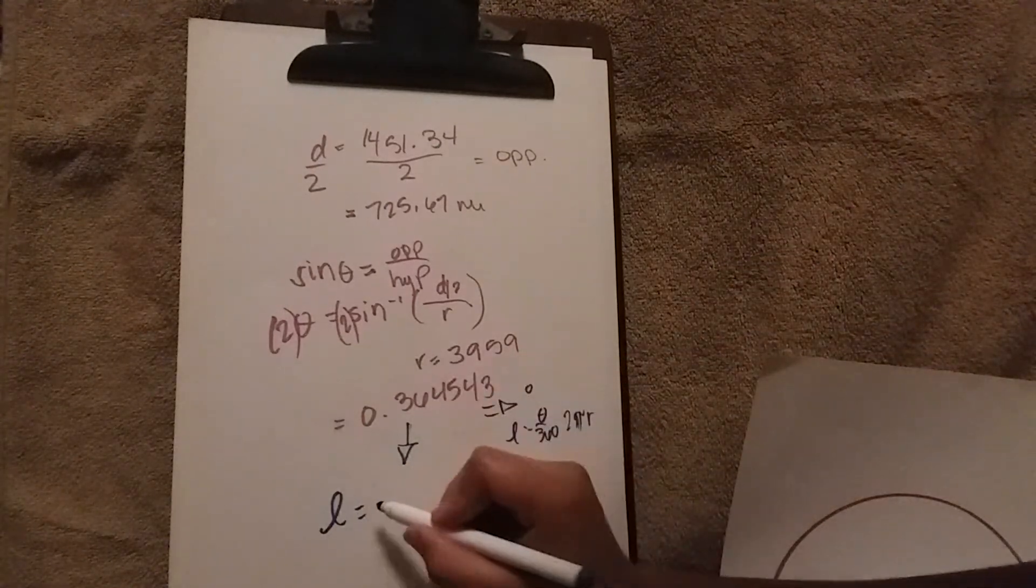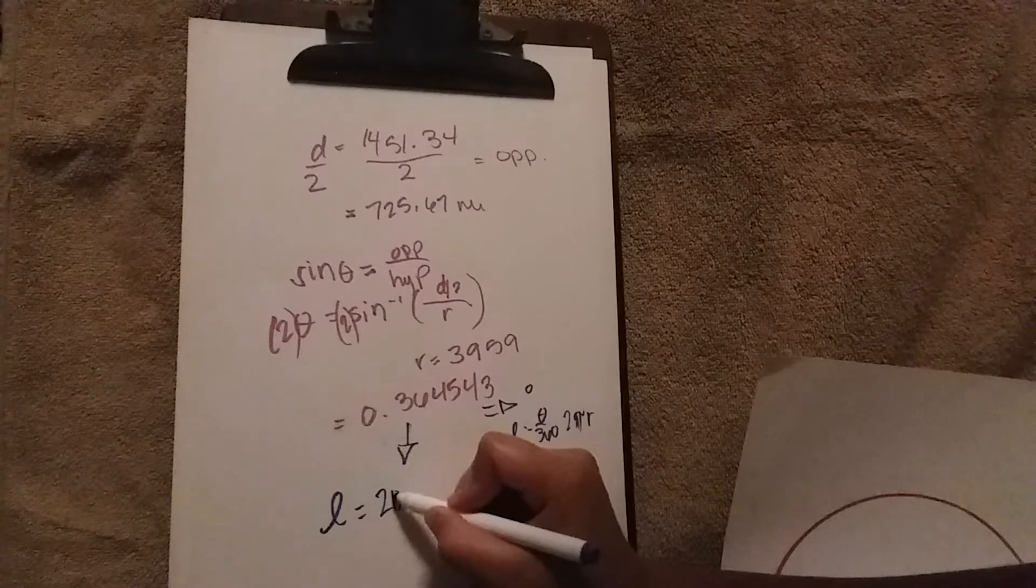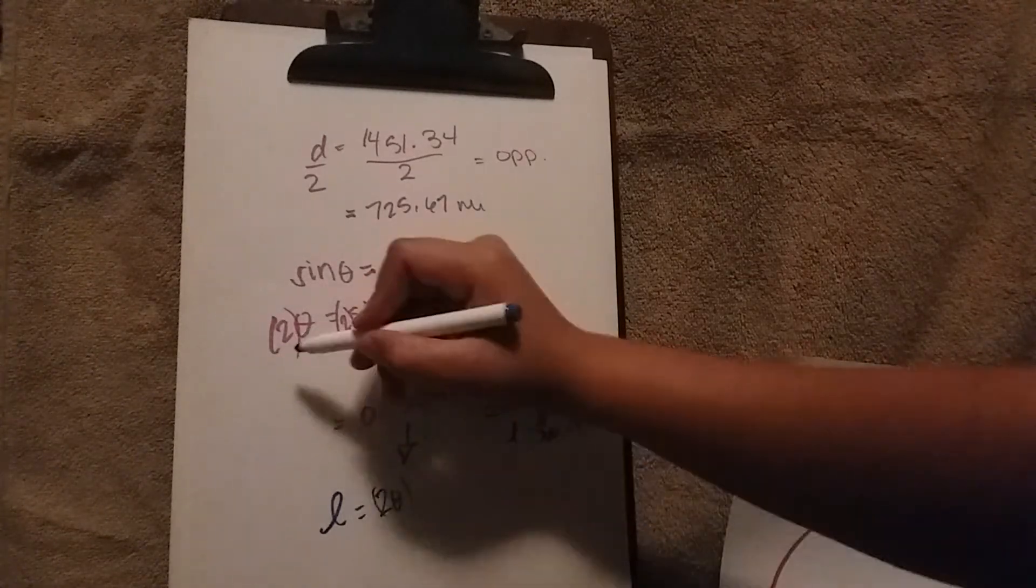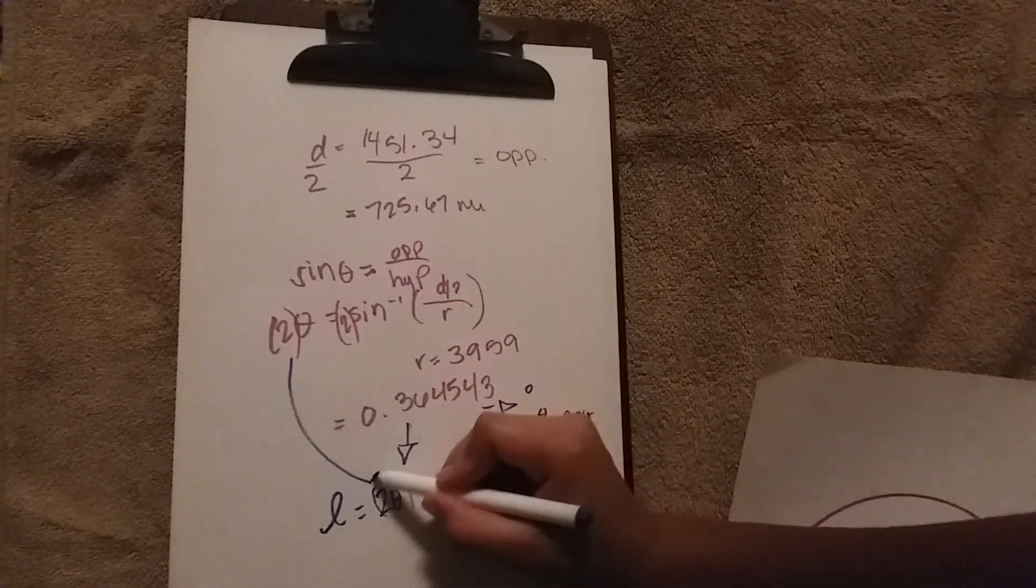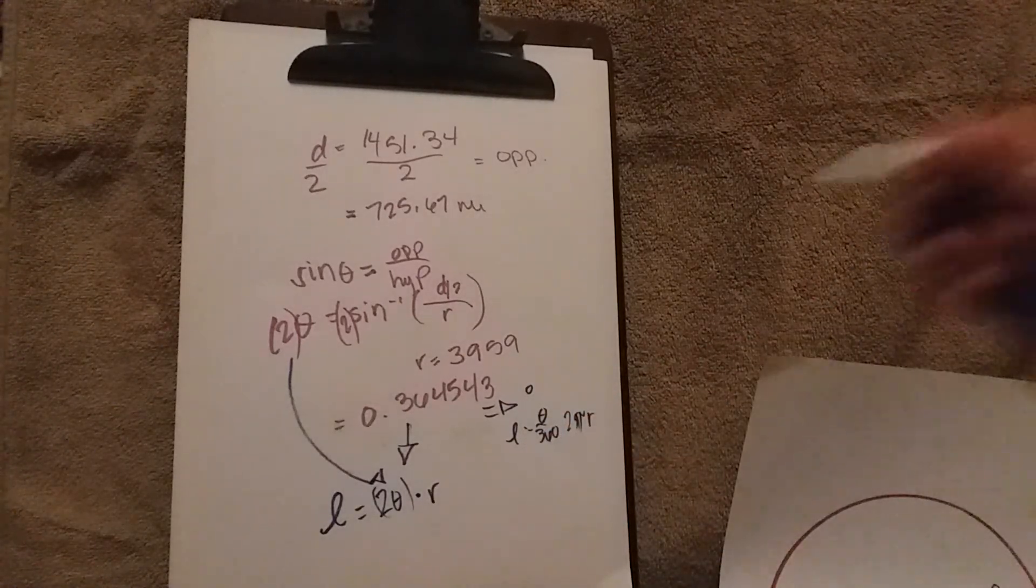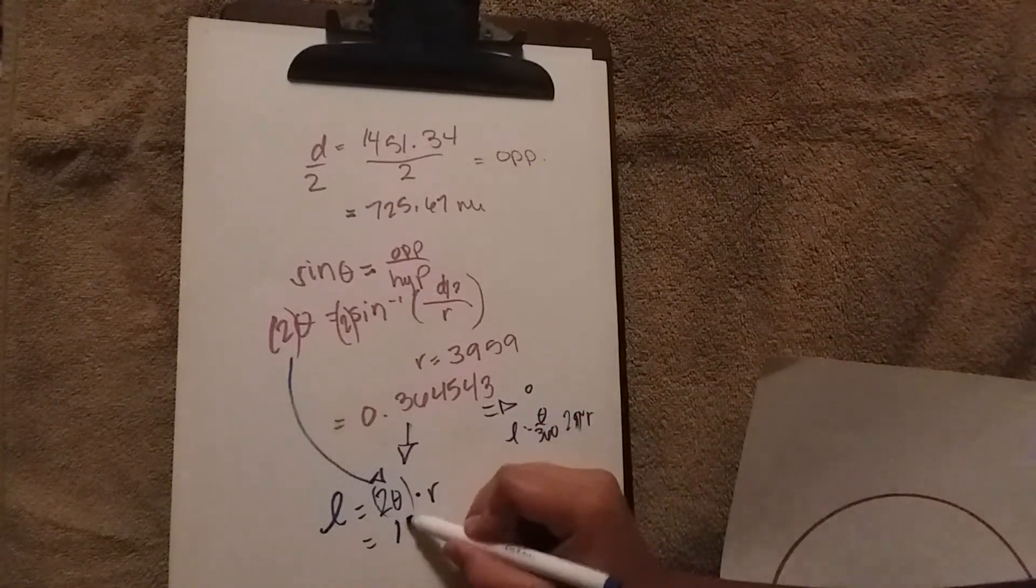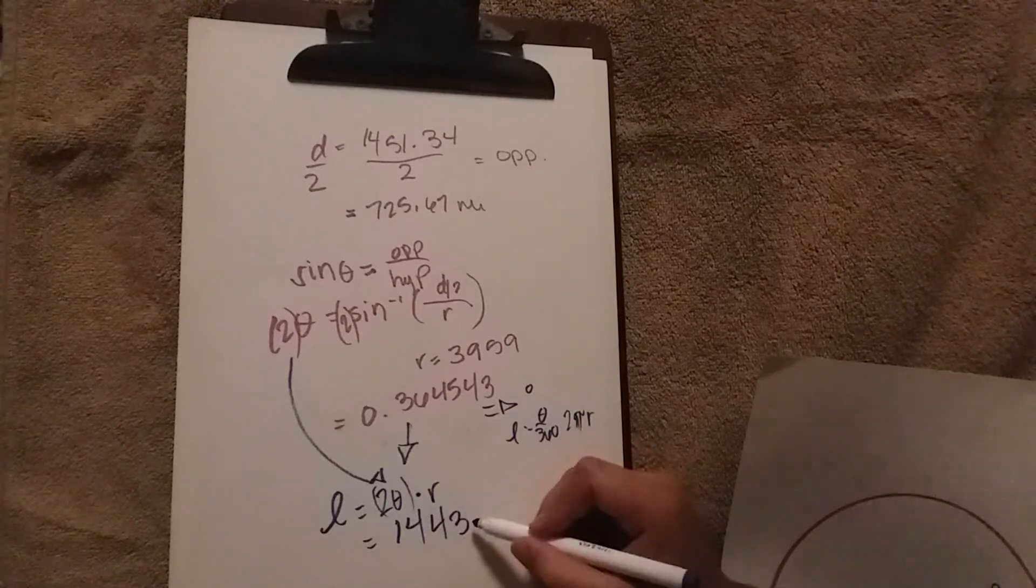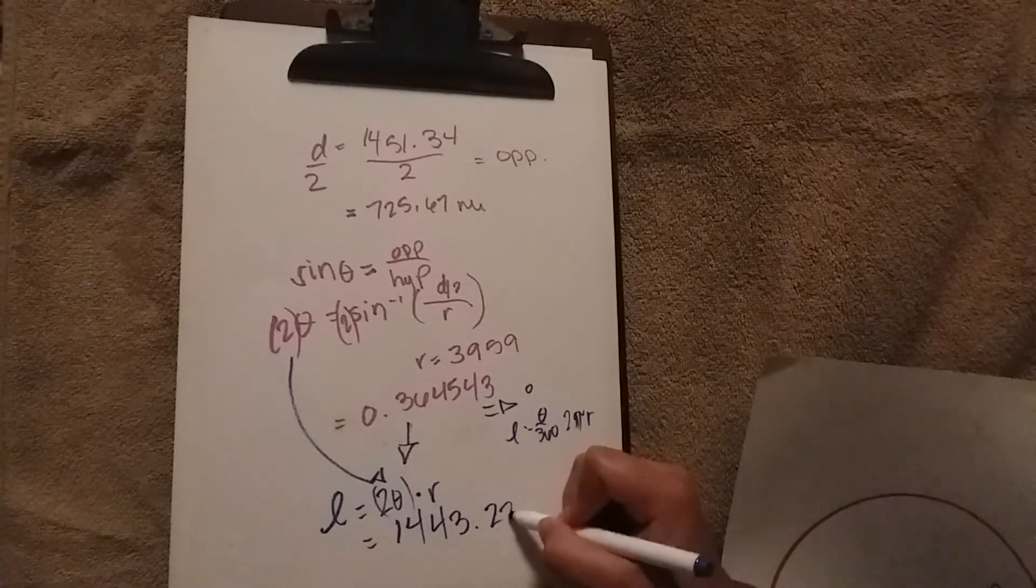This 2 pi here. This value goes here, and you multiply it times the radius, which gives us a distance of 1,443.23.